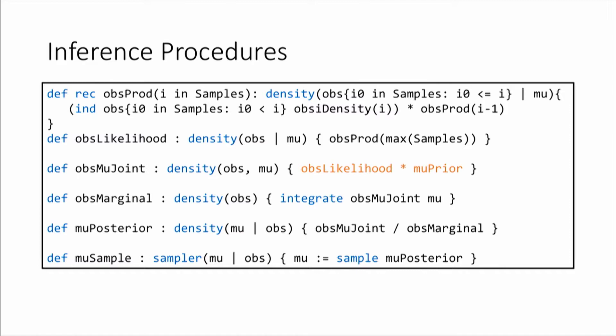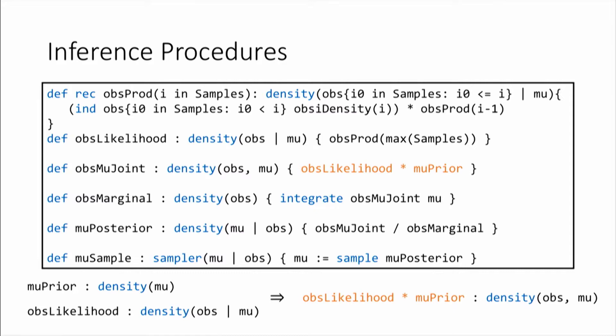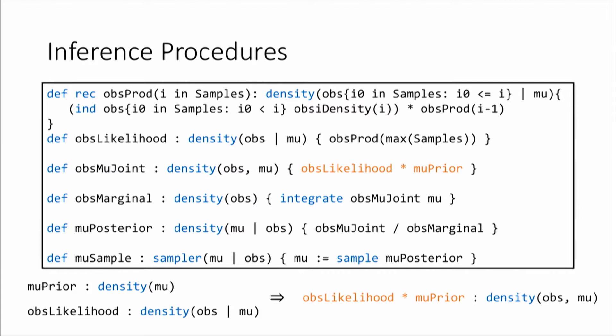There's a lot of cool stuff here, but I want to explain how the type checking works. Zooming in on the multiplication obs_likelihood times mu_prior: Shuffle looks up mu_prior, which has type 'density mu', and obs_likelihood, which has type 'density obs given mu'. It applies a type rule: 'density mu' times 'density obs given mu' gives 'density obs, mu'. Shuffle checks that this derived type matches the type asserted in the program — they're equivalent, so the program passes. If you had written mu_prior times mu_prior instead, Shuffle would throw a type error.